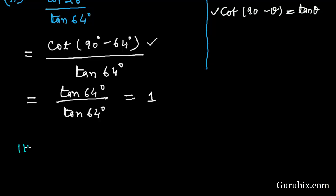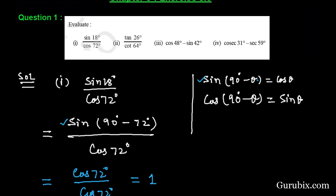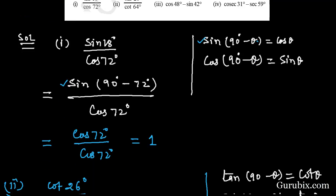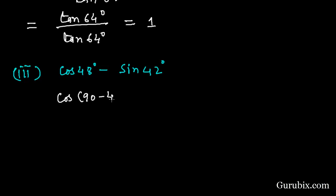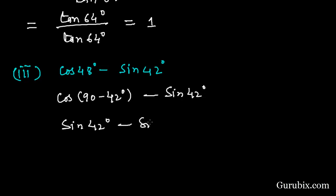Now we move to the third part: cos 48 degree minus sine 42 degree. We change one of the trigonometric ratios using the complementary angle formula. We write cos 48 degree as cos (90 minus 42 degree), which equals sine 42 degree. So we have sine 42 degree minus sine 42 degree, which equals 0. This is the solution of part 3.